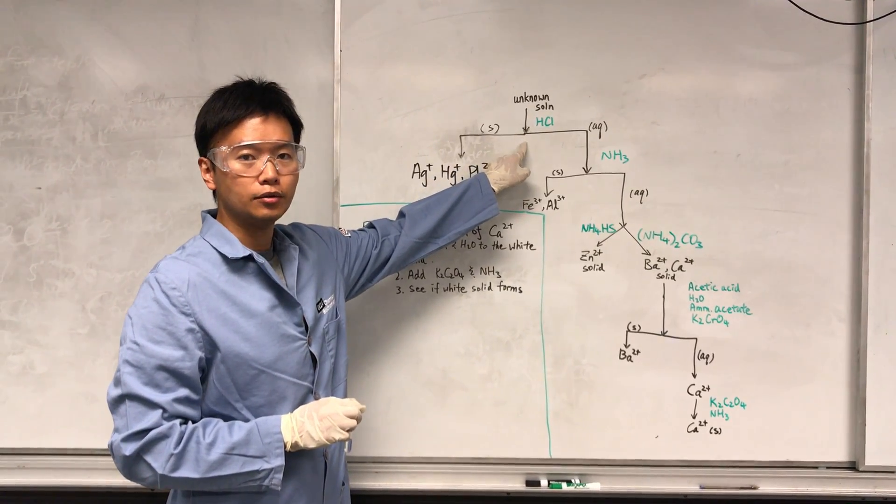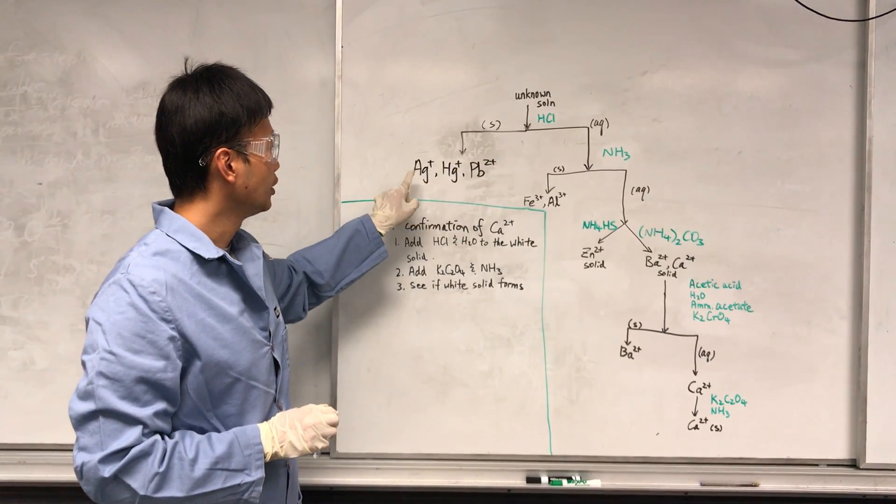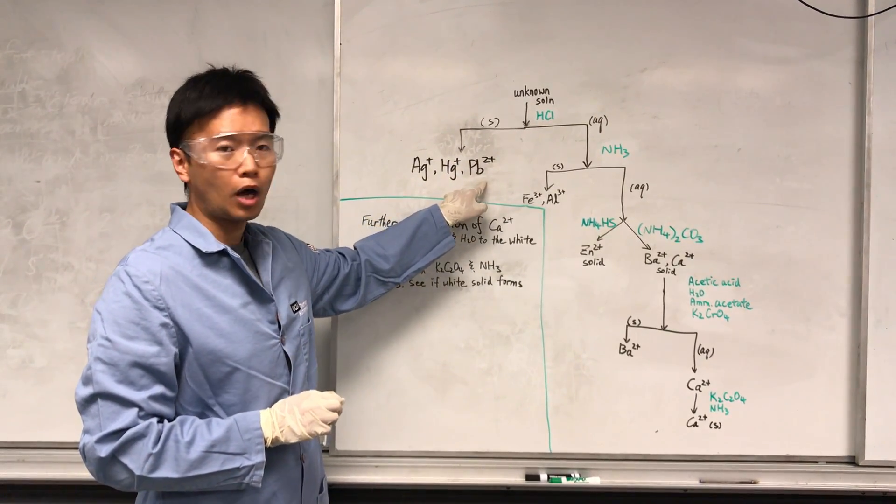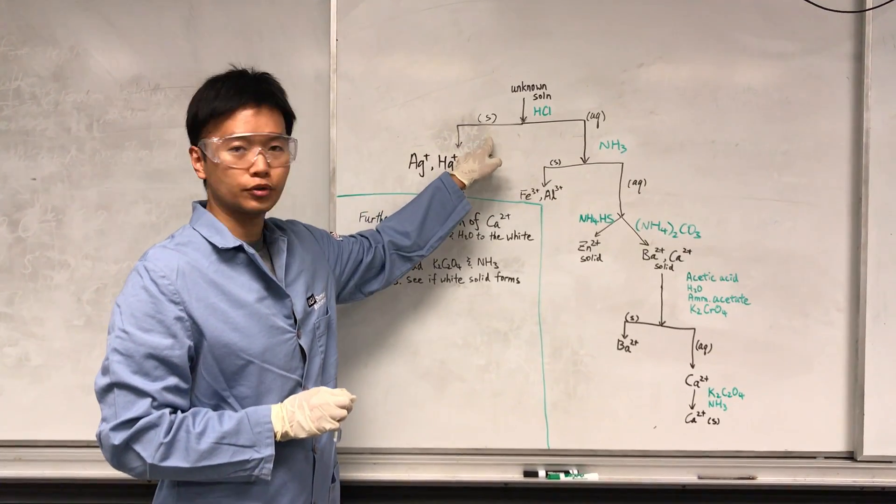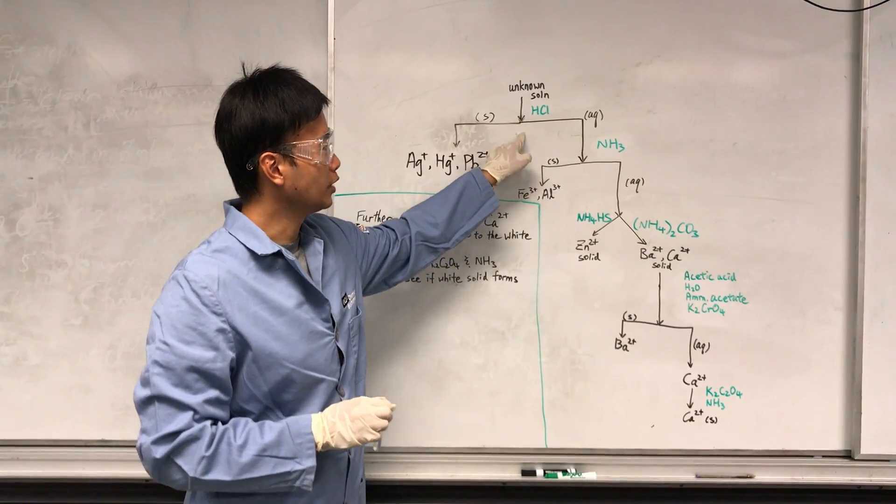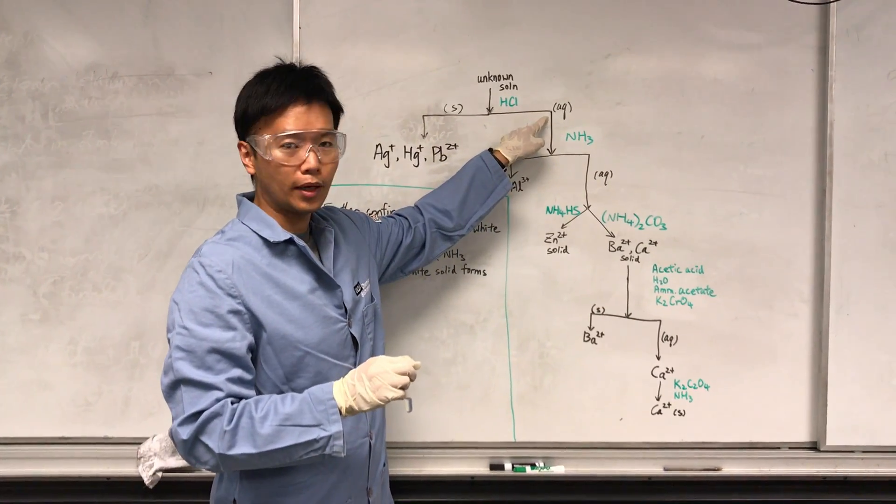So the first step is to add HCl, and if I have any silver metal cation in solution, then it will first precipitate. If not, then the silver will remain in solution.